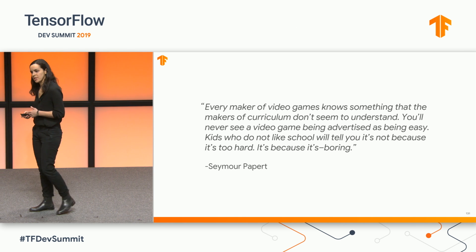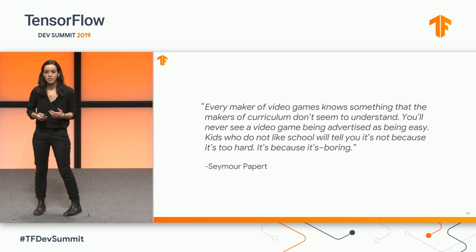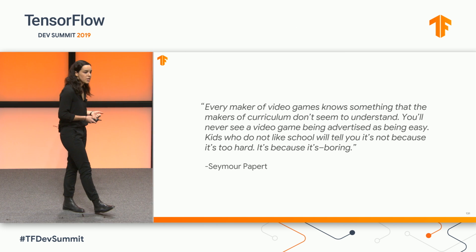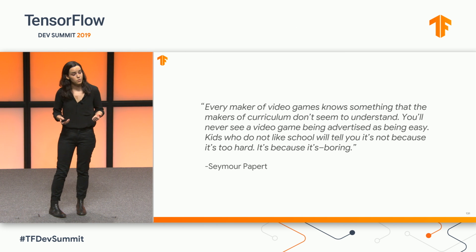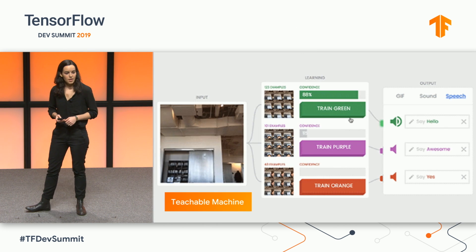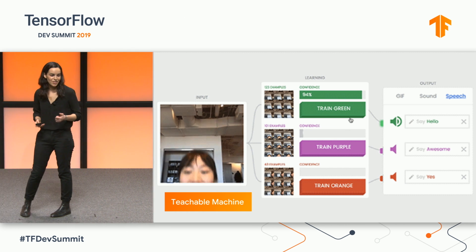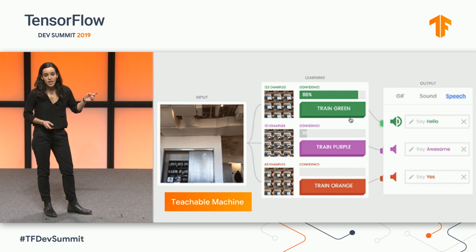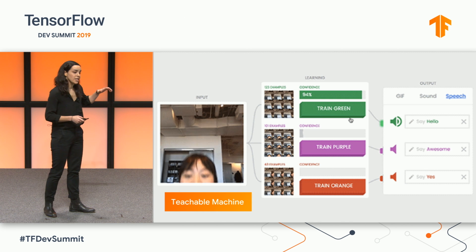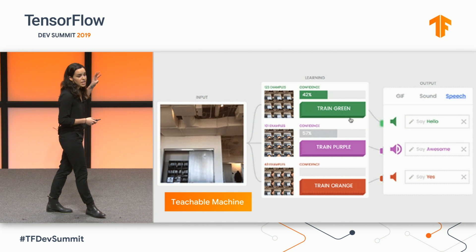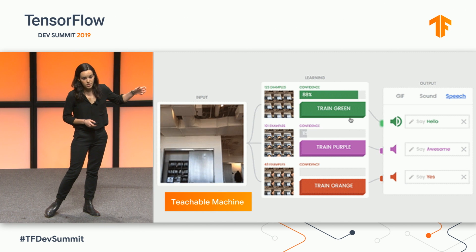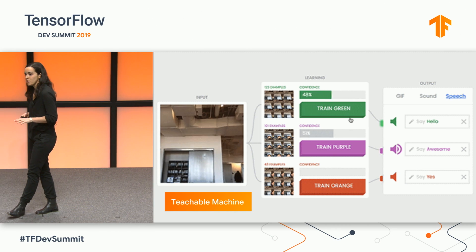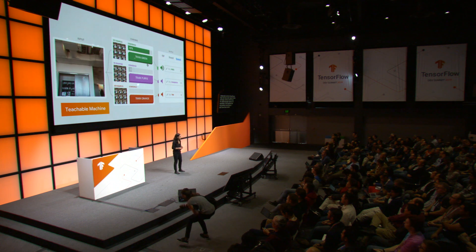I'll show you some projects that were inspired by this thinking — that learning should be engaging — made in collaboration with the TensorFlow.js team and many other research teams at Google. So this is the first one. It's called Teachable Machine. Essentially it's a KNN classifier that runs entirely in the browser, and it lets you train three classes of images that trigger different kinds of inputs, like GIFs and sound.